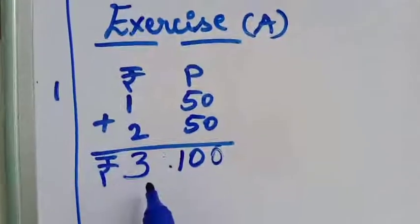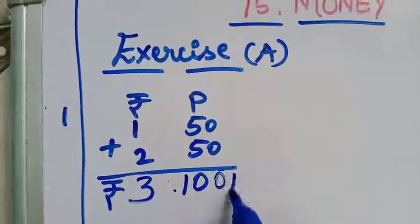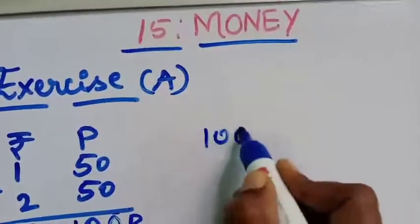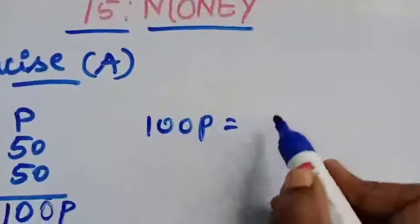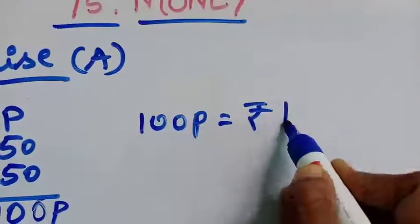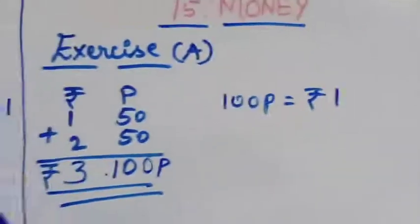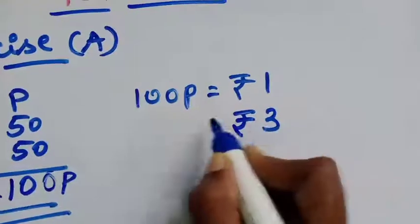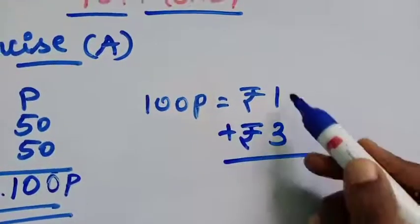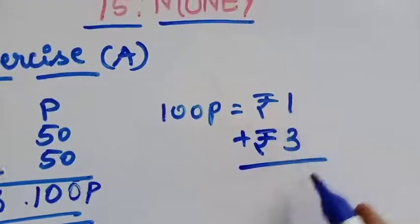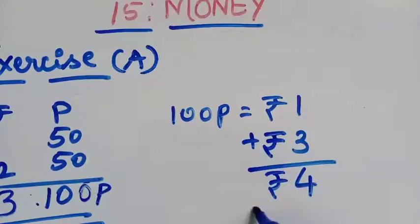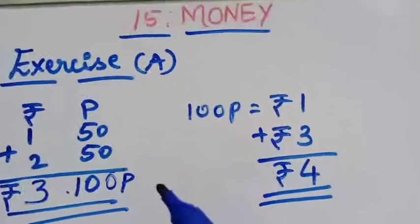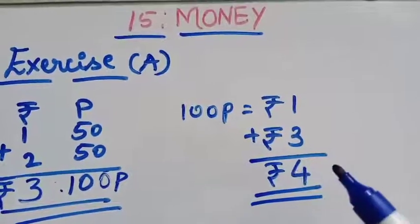So we got ₹3 and 100 paise. Now, as you all know, 100 paise equals ₹1. So we add that 1 rupee to the 3 rupees: 3 + 1 = 4. The total answer is ₹4.